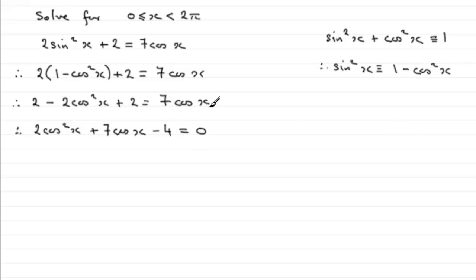So hopefully you're happy with that rearrangement of that equation there, so you've got this in the right format and it should factorize. A couple of brackets, equals zero. It's going to be 2cosx and cosx, so that we get that 2cosx times cosx gives us the 2cos²x. And then we're looking for two numbers that multiply together to give this -4, but when we group together our values here we get 7cosx.